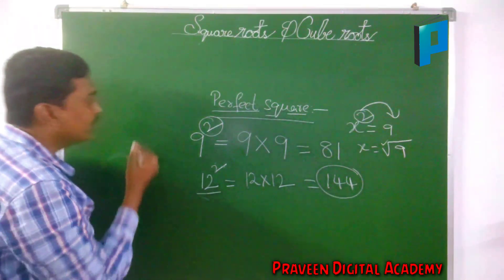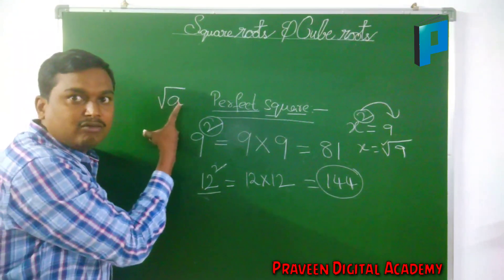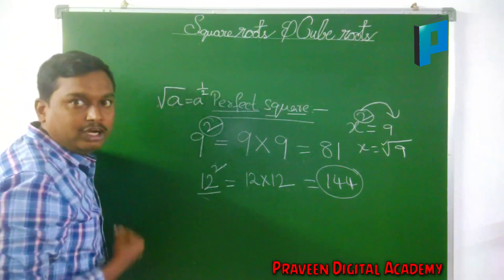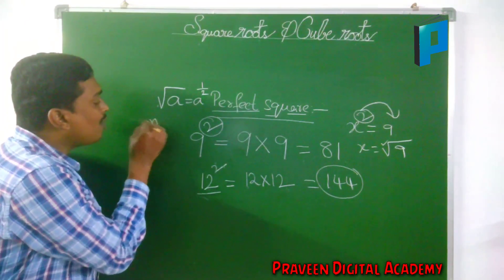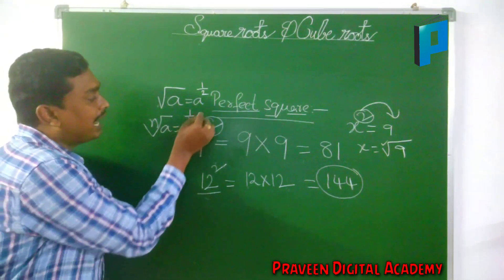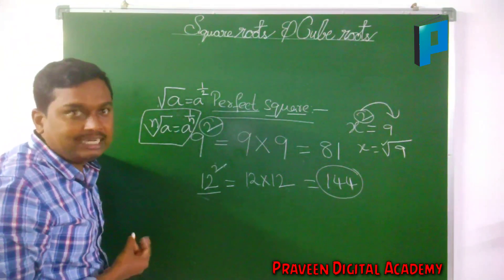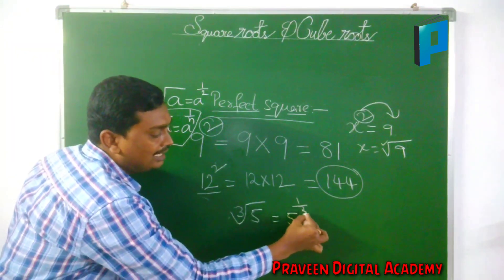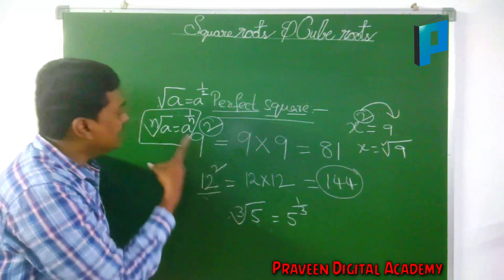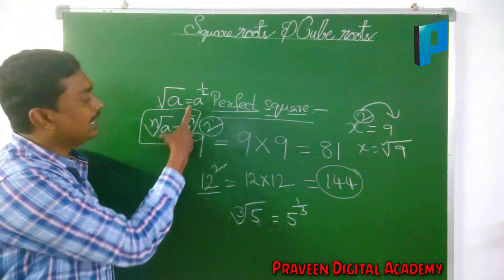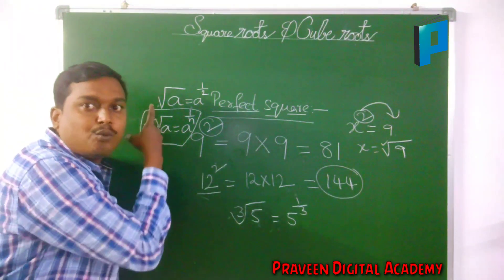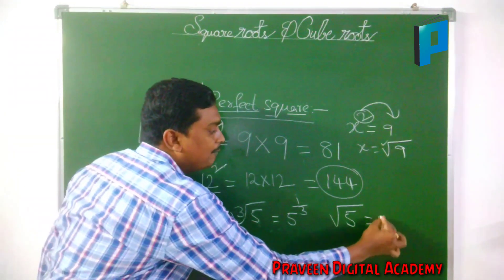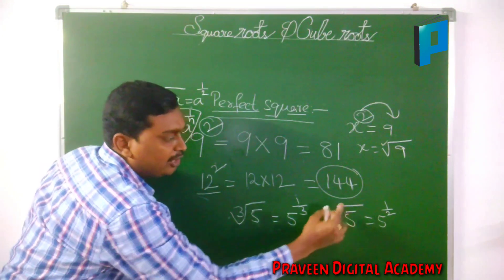The general form of a square root is root a, which can be written as a to the power 1 by 2. Any root in the form of nth root of a can be written as a to the power 1 by n. For example, if you are having cube root of 5, this can be written as 5 to the power 1 by 3, where a is 5 and n is 3. For the square root, under root 5 can be written as 5 to the power 1 by 2.